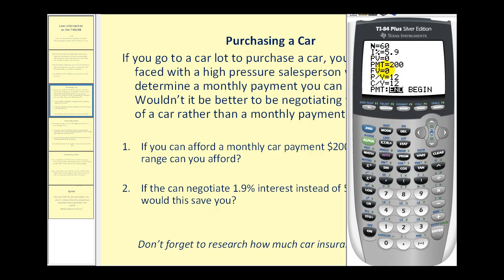Now what we can do is go back up to the present value of the loan, clear this value, and then if we press alpha enter, it will return the loan amount that we can afford. So at 5.9% interest for five years and a $200 monthly payment, we could afford a loan that is roughly $10,370. So if we're looking for a car, we should look for a car that's roughly in this price range, hopefully a little bit less.